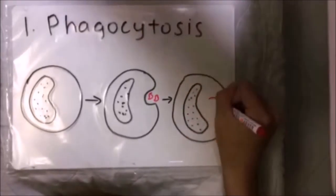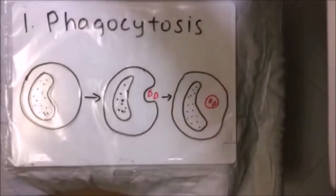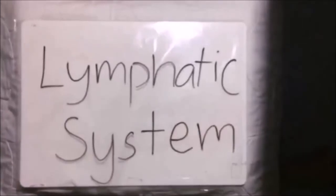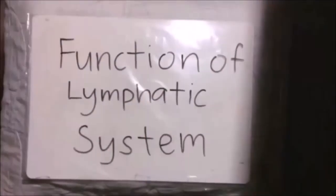When these germs attack the body again, the white blood cells already have a way to deal with that. Our body has a lymphatic system. But what is its function? Let's take a look.